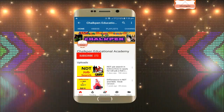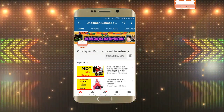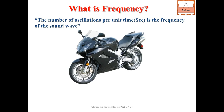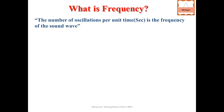Chalo start karte hain. What is frequency? Number of oscillations per unit time is the frequency of a sound wave. Time ko hamesha seconds mein measure karte hain. Jis tarah speed ko km per hour mein bolte hain, usi tarah number of oscillations ko per second ke reference se frequency kehte hain.